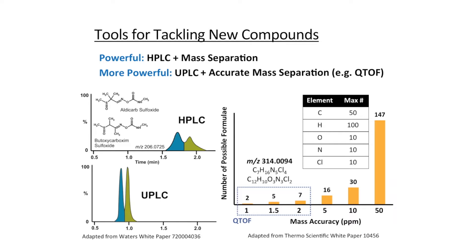In this example here, if we had this compound mass at 314.0094 and we improved our mass accuracy from 10 parts per million to 1 part per million — which is well within the range regularly achieved using a QTOF mass spectrometer — you can see that we eliminate 28 possible assignments, which is really significant.